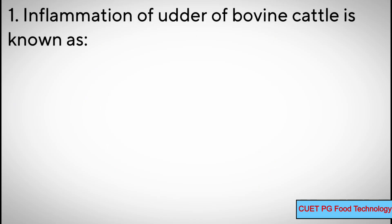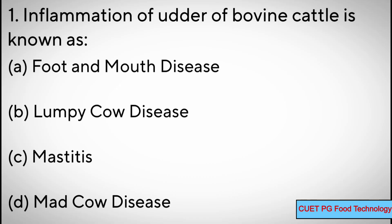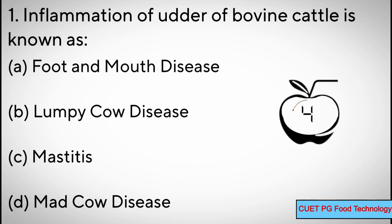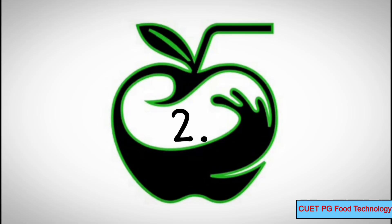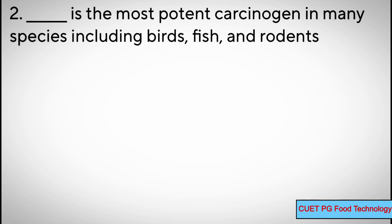Question number one: inflammation of the udder of bovine cattle is known as — options: A) foot and mouth disease, B) lumpy cow disease, C) mastitis, D) mad cow disease. Correct answer: C) mastitis.